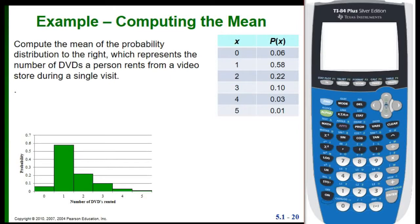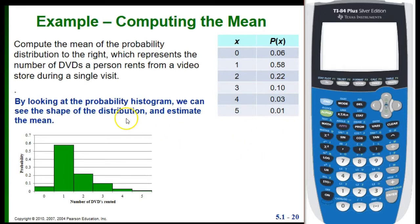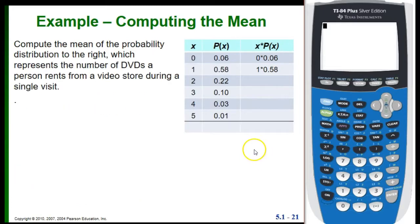We're going to look at an example of computing the mean for a probability distribution. This probability distribution represents the number of DVDs a person rents from a video store during a single visit. We have our probability distribution with the values of x in this column and the probabilities of x in the second column. Now we can look at the probability histogram to try and estimate the value of the mean, but what we want to do here is actually figure out how to calculate it.